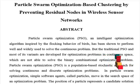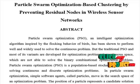Particle swarm optimization, or PSO, is an intelligent optimization algorithm inspired by the flocking behavior of birds. It has been shown to perform well and widely used to solve continuous problems. But the traditional PSO and most of its variants are developed for optimization problems in continuous space, which are not able to solve the binary combinational optimization problem.